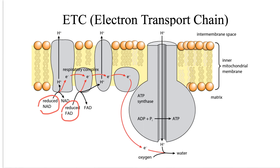For A2 biology, you don't need to know any names of the protein complexes in ETC. As the reduced NAD reaches the ETC, hydrogens are removed, and each hydrogen is split into its proton — the hydrogen ion — and the electron. The energetic electron is transferred to the first of a series of electron carriers, as you can see in the diagram. So as this protein complex receives the electron, it's energized, and this energy is used to pump the hydrogen ion, or proton, from the matrix of the mitochondrion into the intermembrane space.